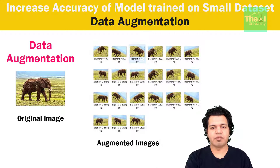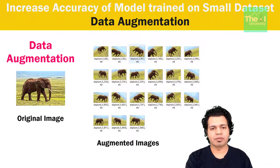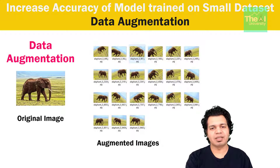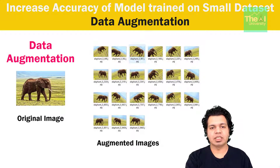By introducing variations using data augmentation, we can reduce the overfitting problem as well as generate a huge amount of data for model training. Data augmentation is a technique where we generate new training samples from the original ones by applying some transformations, while ensuring that the class labels of the data are not changed. This way we can turn a smaller dataset into a bigger dataset, and very little effort is required to perform this task.